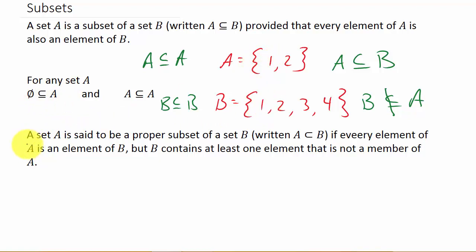Okay, and then here we have a set A is said to be a proper subset of a set B, if every element of A is an element of B, but B contains at least one element that is not a member of A. So here, A would also be a proper subset of B, because B contains at least one element that A does not. But A is not a proper subset of A, because they contain the exact same.